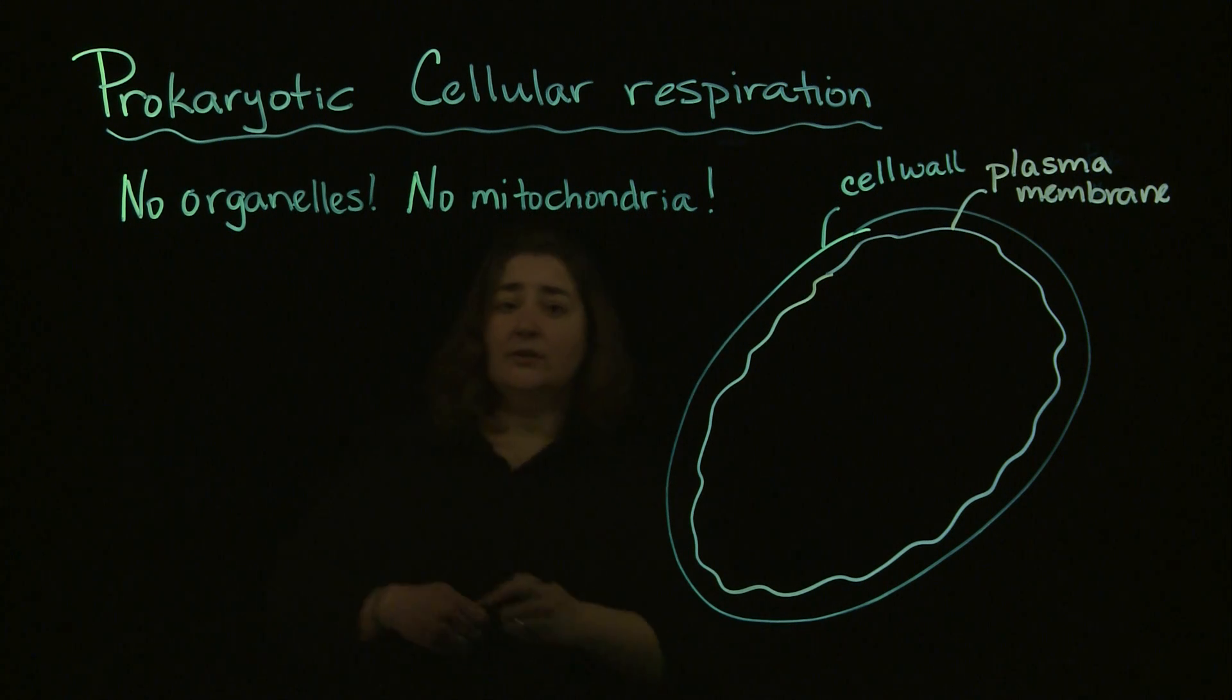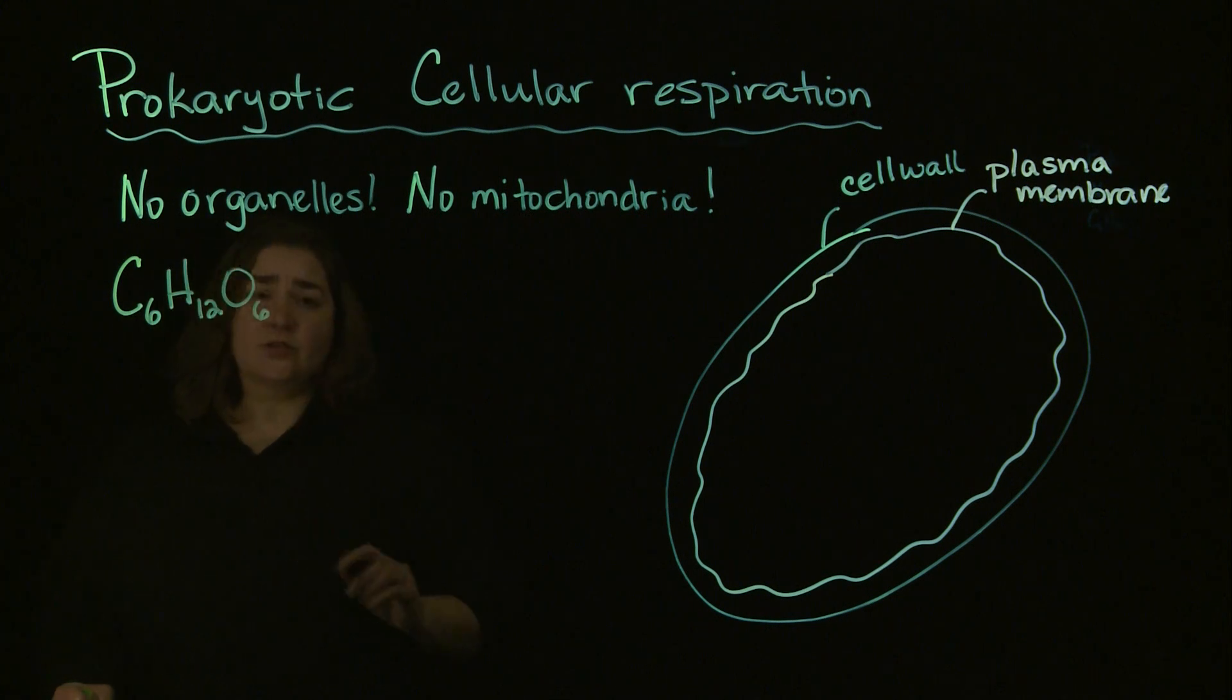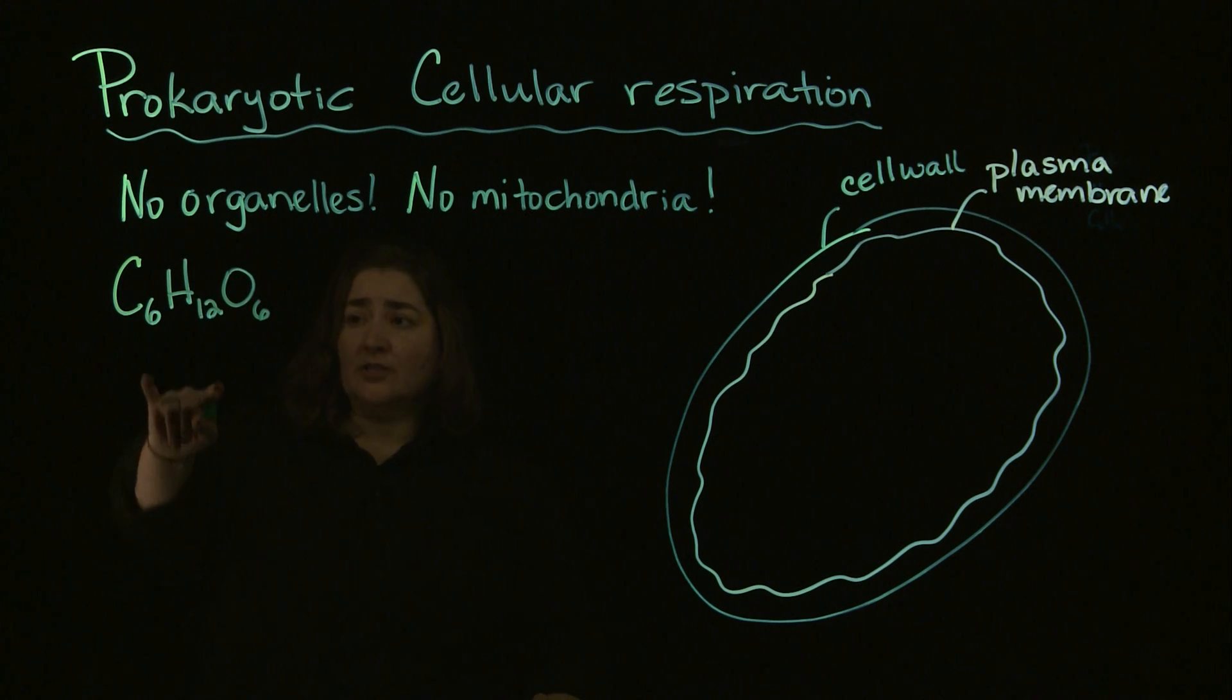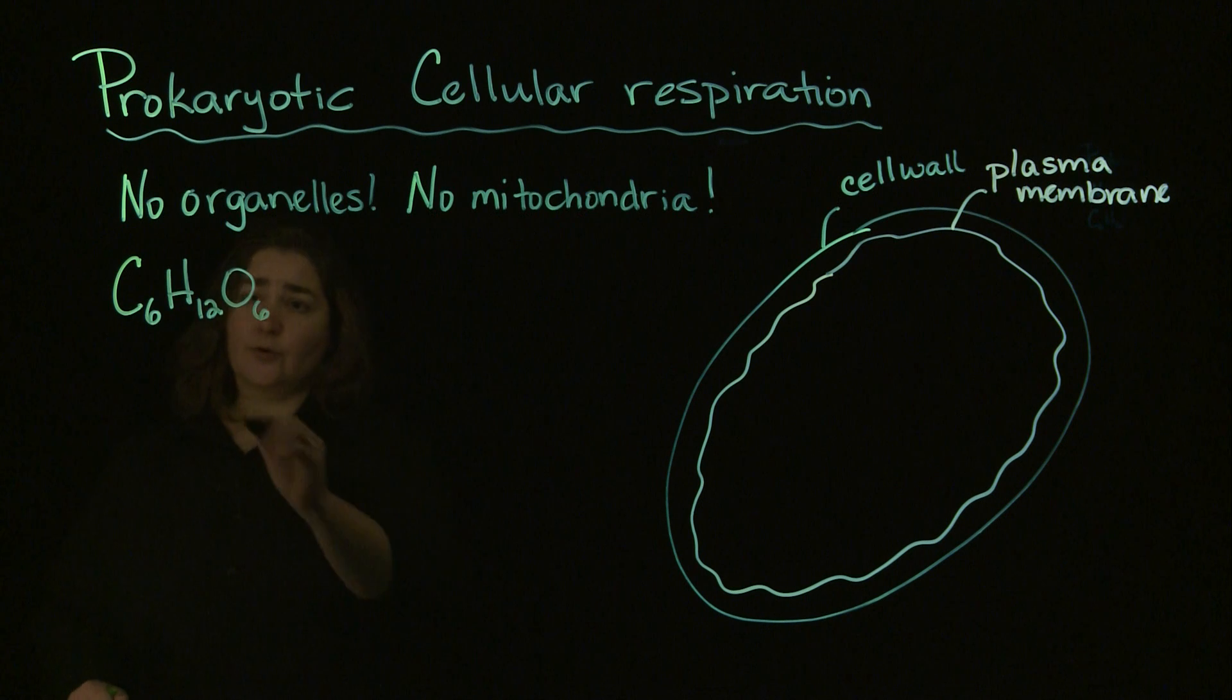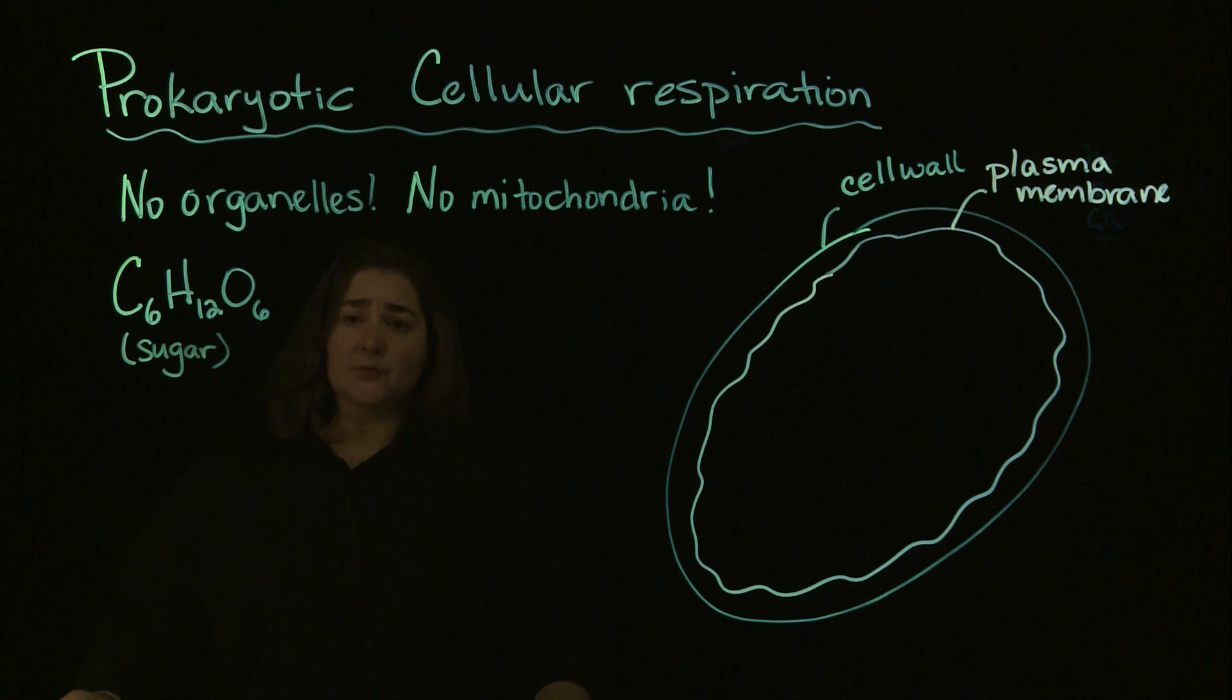And with our prokaryotic cell, what we're going to talk about in terms of cellular respiration, we're talking about taking sugar, which the chemical equation for sugar is C6H12O6. And typically, the sugar that we use for an example with cellular respiration is going to be glucose.